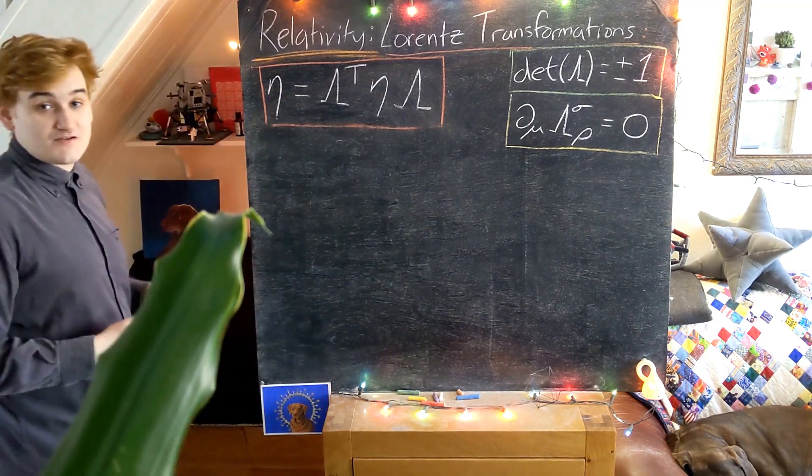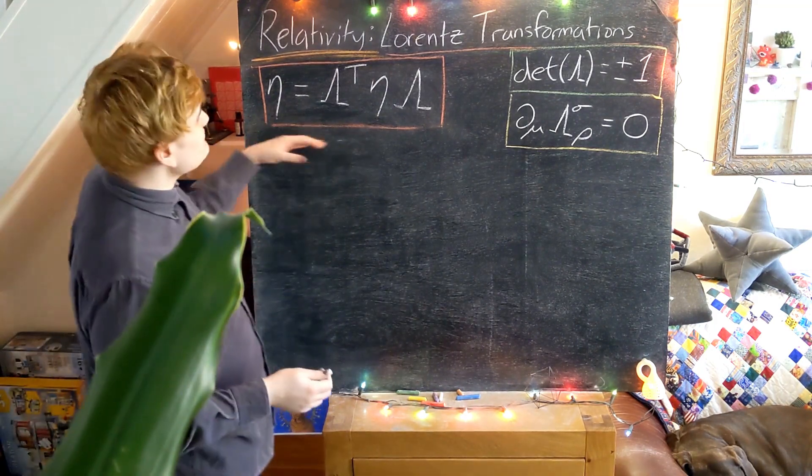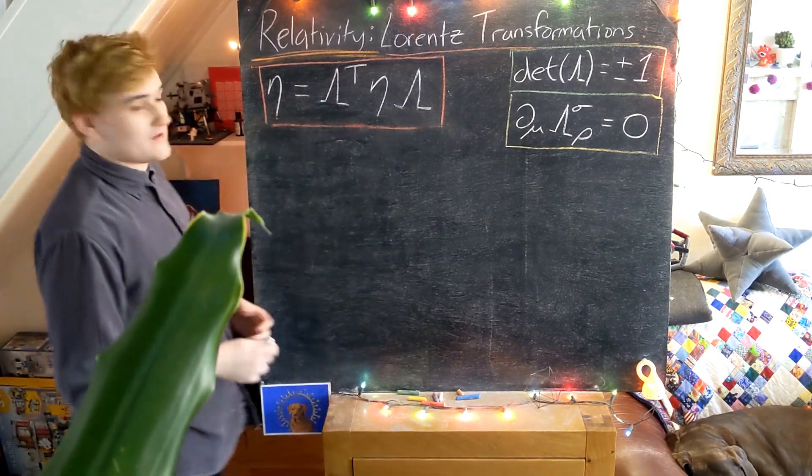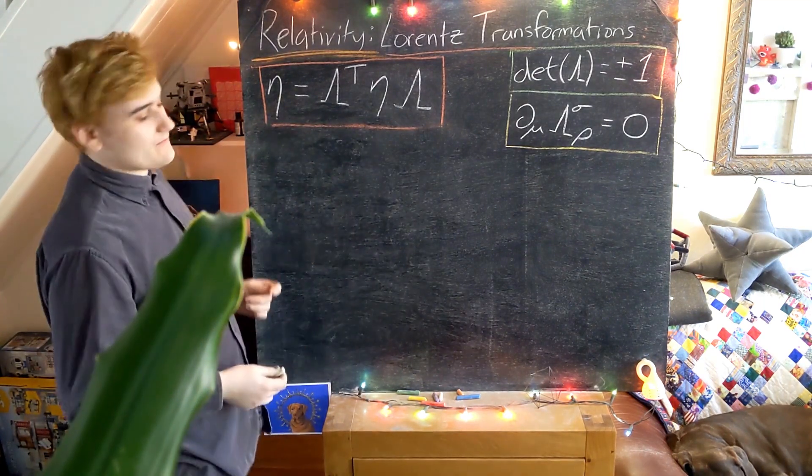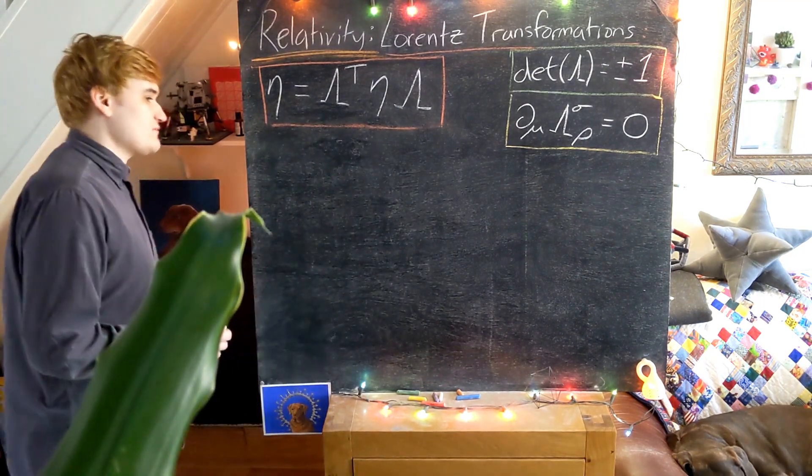So now we've seen that an orthogonal rotation between space components is a Lorentz transformation. Let's now introduce a new matrix and show that it's also a Lorentz transformation.